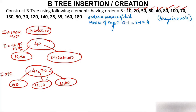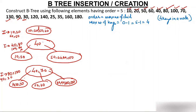Insert 130 — it goes after 100 in the right child. Insert 90 — it goes between 80 and 100, which is still possible since there is space. The right child now has 80, 90, 100, 130. Insert 30 — 30 is less than 40 so it goes to the left child. Left child now has 10, 20, 30.